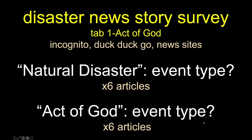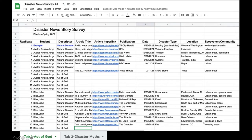Our first collection of data is going to be on the first tab of our data sheet. We're going to search for specific terms — use quotes to make sure we have the exact term in the story. Search 'natural disaster' or 'natural disasters,' and tell me about the news story you find. You need to do six of those. Then do the same thing for 'act of God' or 'acts of God' — also six different stories.